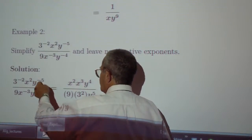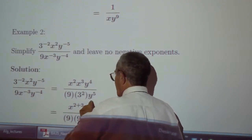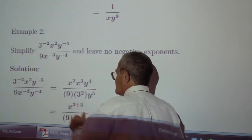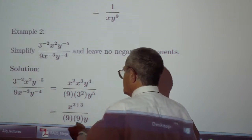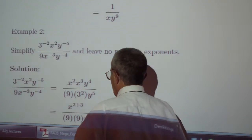And we have y to the 4 and y to the positive 5 if we interchange the exponents and we go across the fraction bar.